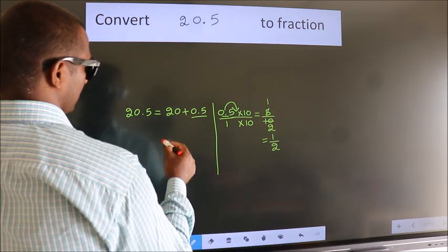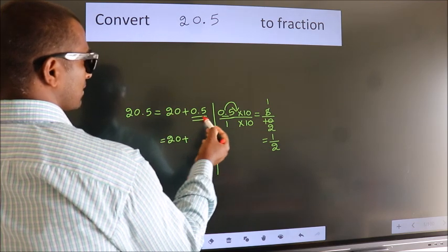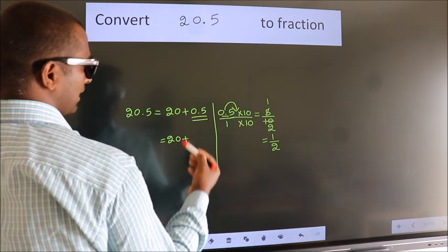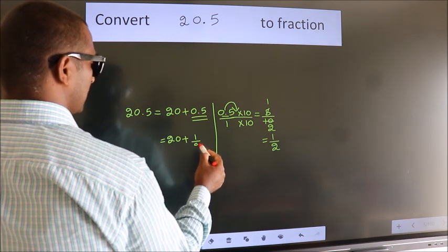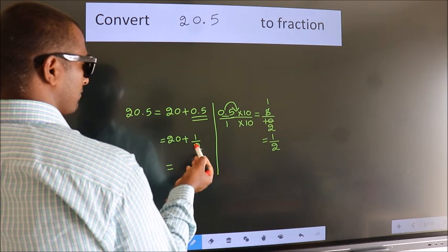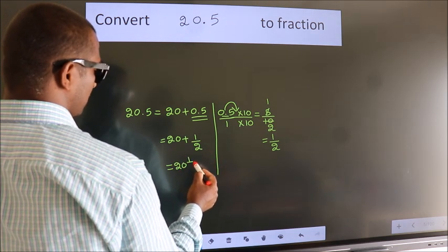Now here, 20 plus, in place of 0.5, we write this fraction 1 by 2. 20 plus 1 by 2. In mixed fraction, it is 21 and 1 over 2.